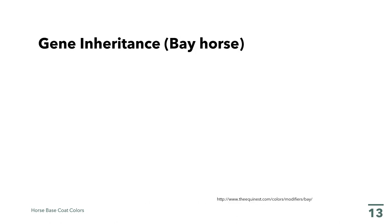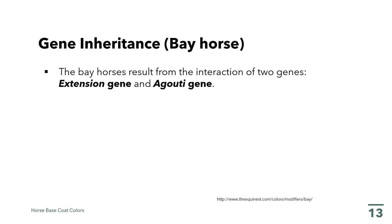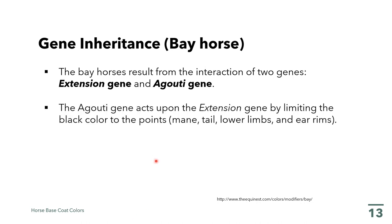The bay horse results from the interactions of two genes: the extension gene and the agouti gene. The agouti gene acts upon the extension gene by limiting the black color to the points — the mane, the tail, the lower limbs, and the ear rims. Considering all possible combinations of these two genes present in a bay horse, the outcome from the mating of two bay horses will be predominantly a bay horse.